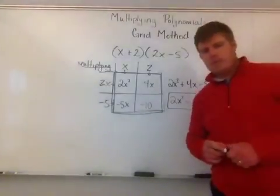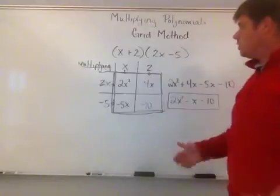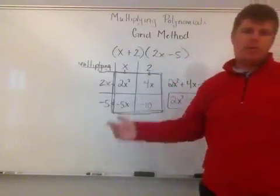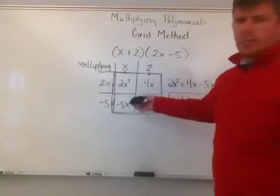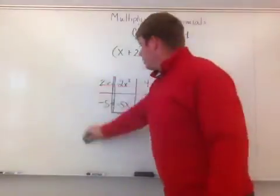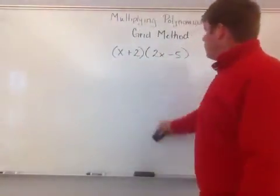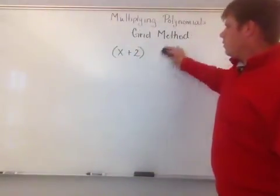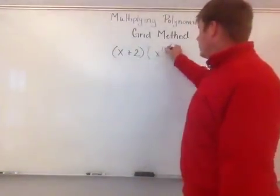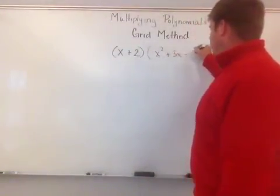So let's bump this up a notch and let's change it a little bit. So instead of just being a binomial times a binomial, let's do maybe a binomial times a trinomial. And we're still going to apply this grid method. So I'm going to keep the first one the same. I'm just going to change the second one. And I'm going to say let's make this x squared plus 3x minus 1.